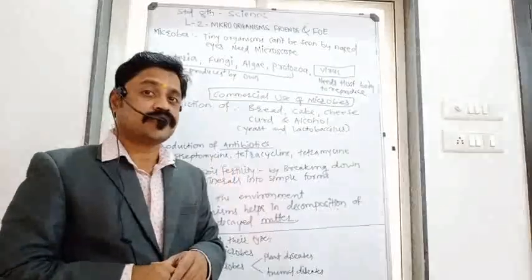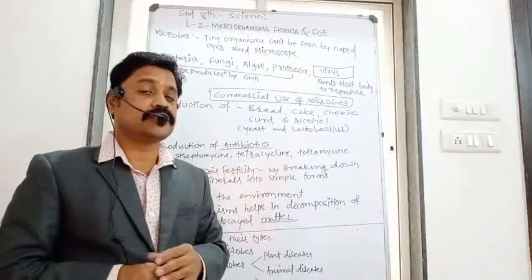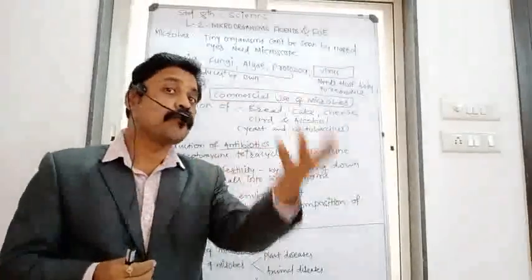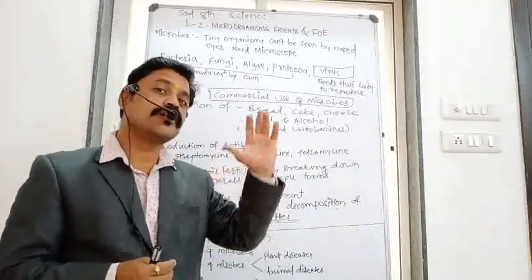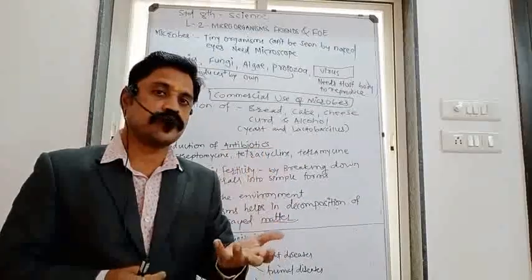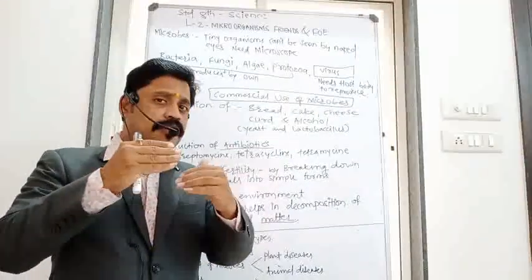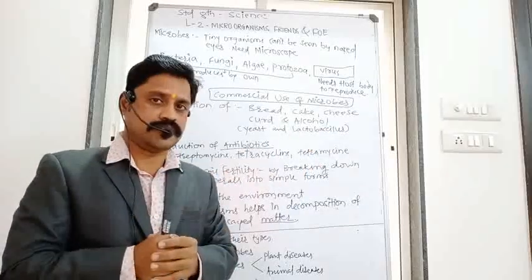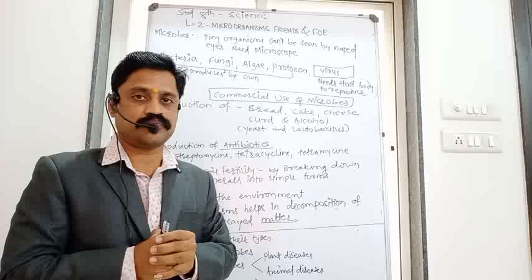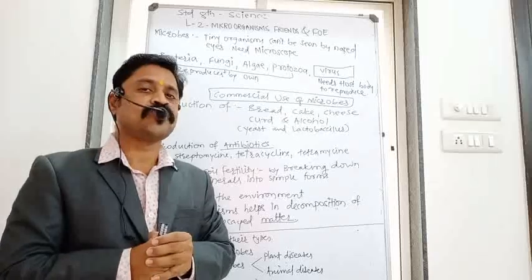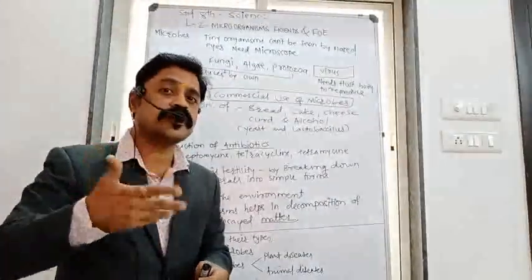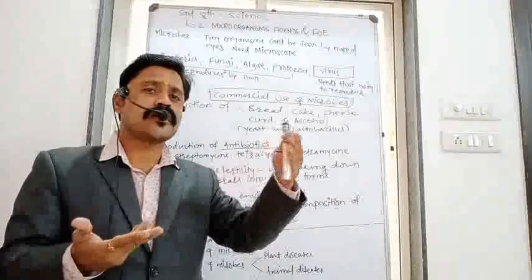You might be wondering why viruses are not categorized with the four types. Viruses are also microscopic and come under the category of microscopic organisms. They are also microorganisms, but the major difference is that bacteria, fungi, algae, and protozoa can reproduce on their own.